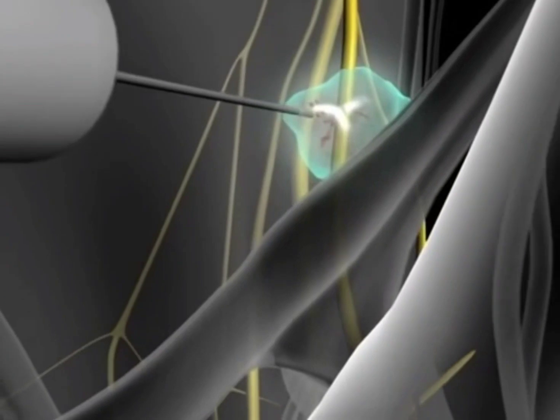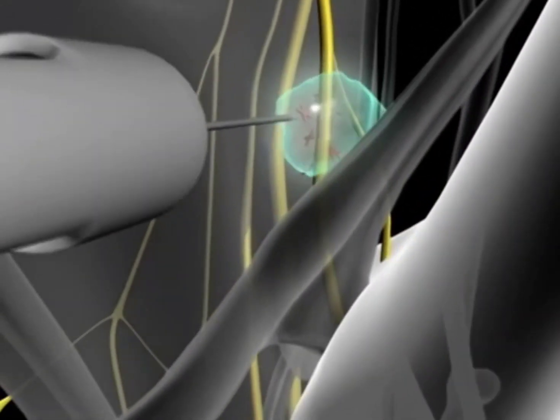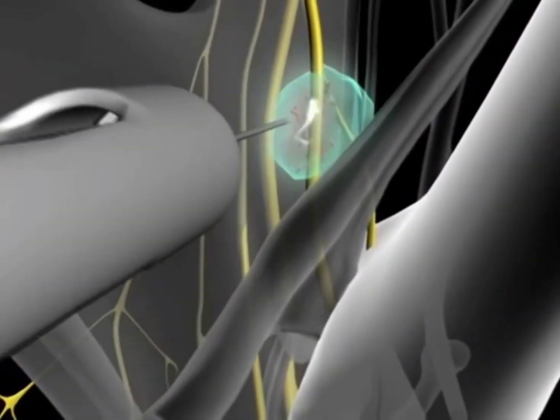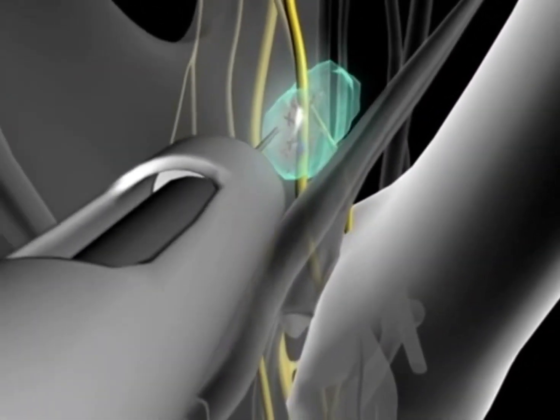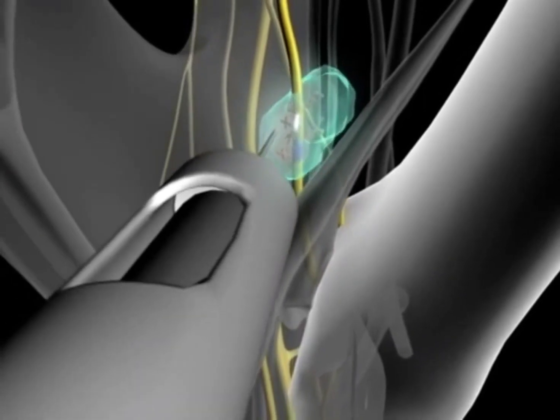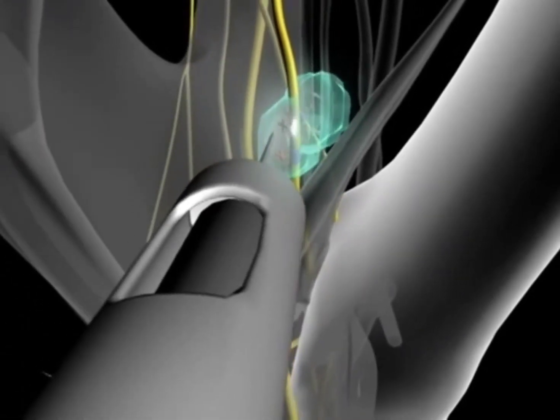Begin the flow of anesthetic at a slow rate so that you have completed delivering the entire cartridge in about one to two minutes. Then carefully withdraw the needle, following the same path used for entry.